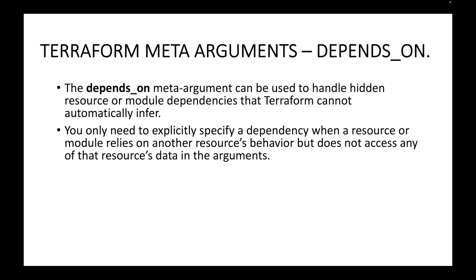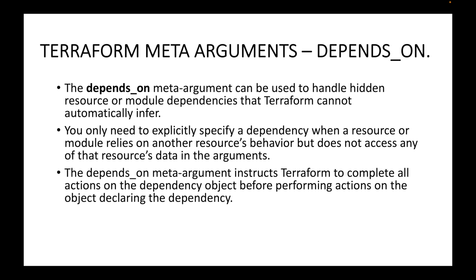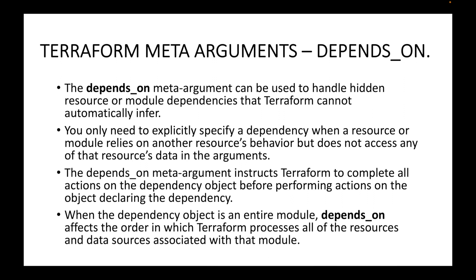For example, if you have an EC2 instance and a DB instance, and the EC2 instance depends on the DB instance, you can create a dependency between these two resources. The depends_on meta argument instructs Terraform to complete all actions on the dependency object before performing actions on the object declaring the dependency. So if the DB instance should be launched first, Terraform will launch it first and then launch the EC2 instance.